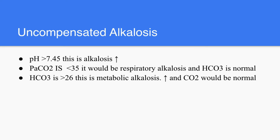In cases of uncompensated alkalosis, the pH would be high — more than 7.45. You look at the PaCO2: if it's less than 35, then this is mainly respiratory alkalosis, and since it's uncompensated, the bicarb would be normal. If it's metabolic alkalosis, then the bicarb would be more than 26, and in case of uncompensated, the PaCO2 would be normal.